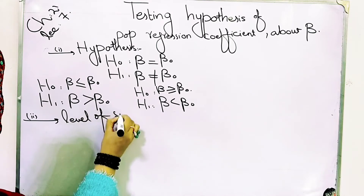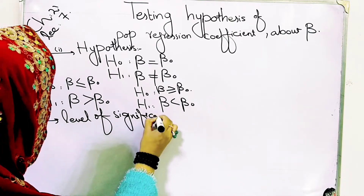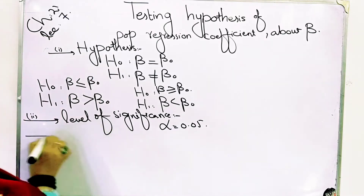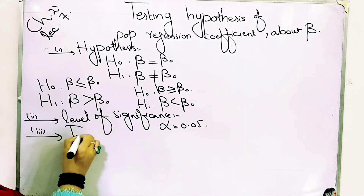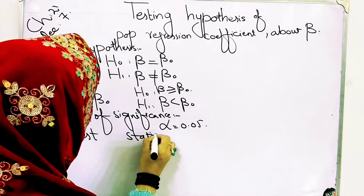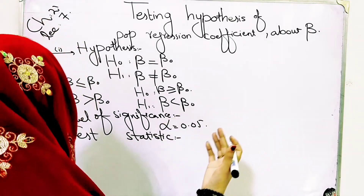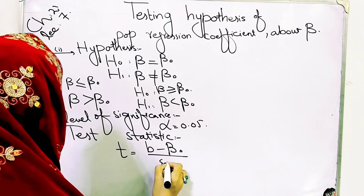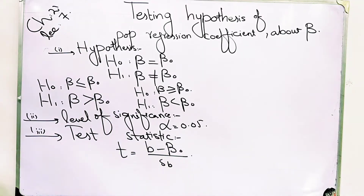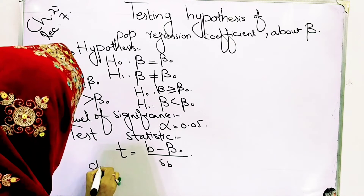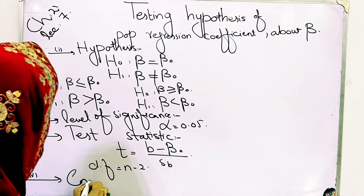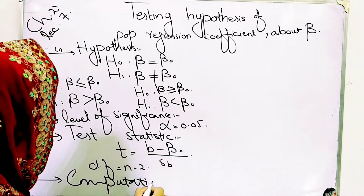The second step is the level of significance. If the level of significance is given in the question, use it; if alpha is not given, take 0.05 by default. The third step is test statistics, where we use the formula: t = (b - b₀) / Sb. The degree of freedom in the t-distribution is n - 2.